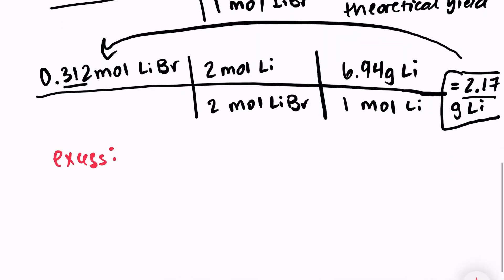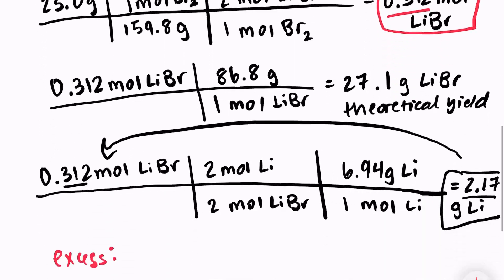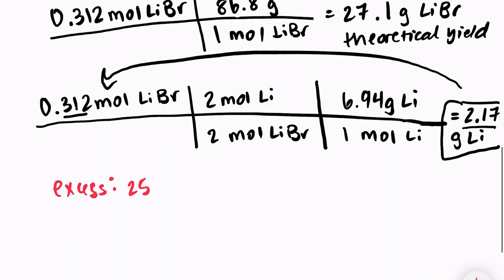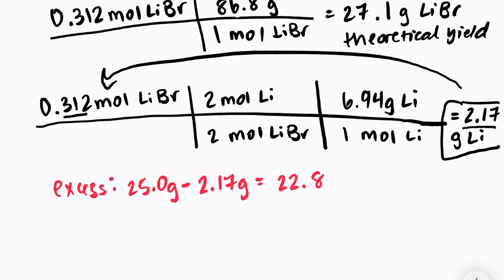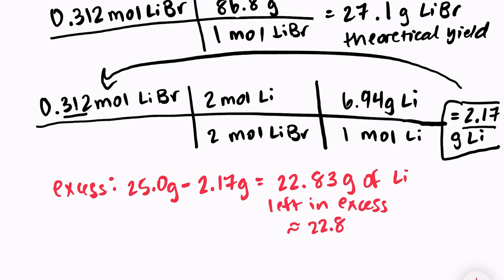To find the excess, I take the amount of lithium we started with — 25.0 grams — and subtract the amount used: 25.0 − 2.17 = 22.83 grams of lithium left in excess, which we round to 22.8 grams of lithium remaining at the end of the reaction.